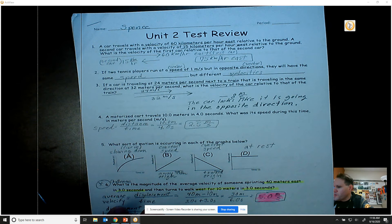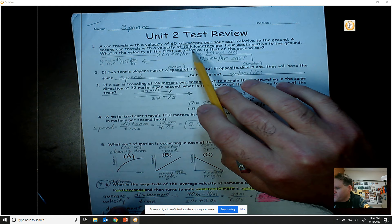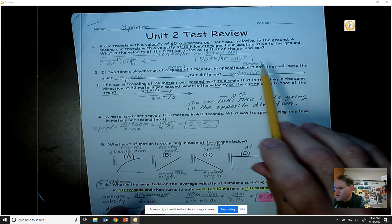A second car travels the velocity of 15 kilometers per hour west relative to the ground. What is the velocity of the first car relative to that of the second car? So what I do is I draw vector diagrams.